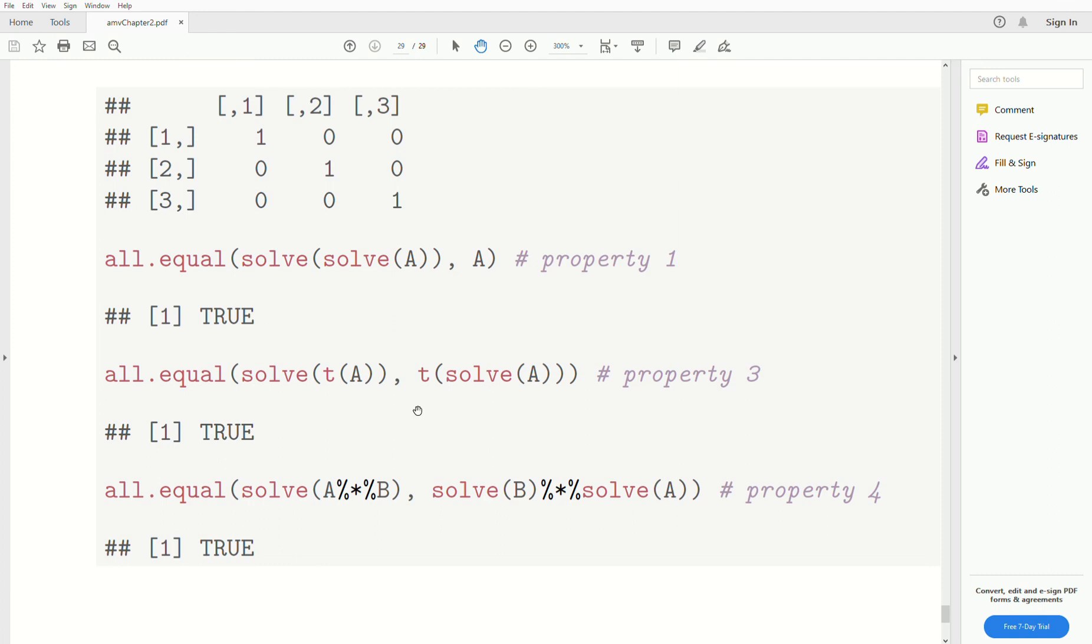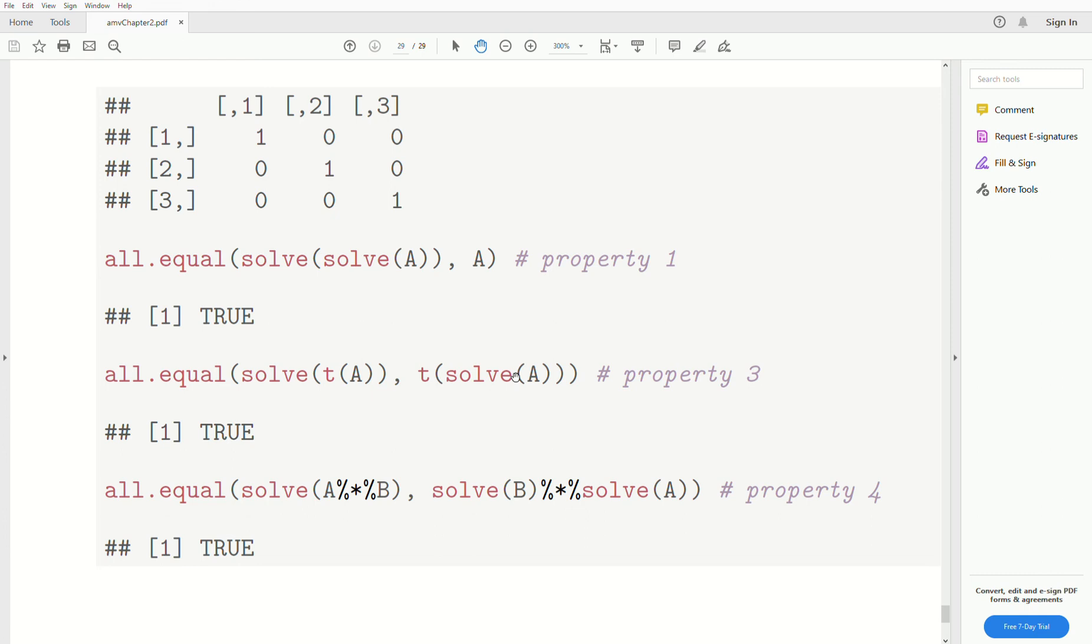This is property 3. So the inverse of A transpose is equal to the transpose of the inverse. And that's true. Property 4 is the inverse of A times B is equal to the inverse of B times inverse of A. And that's true.